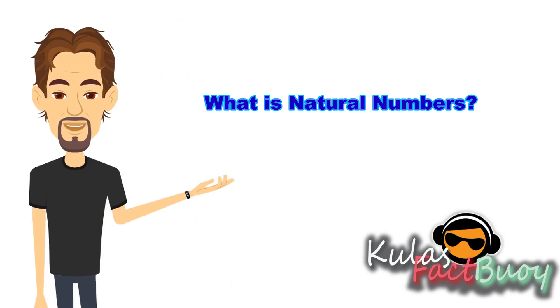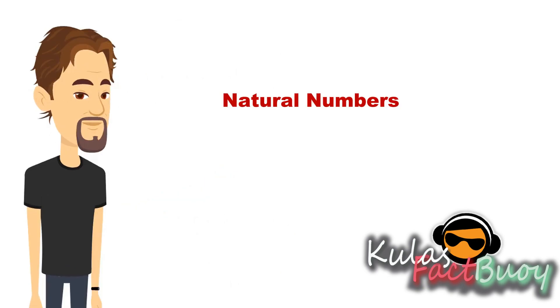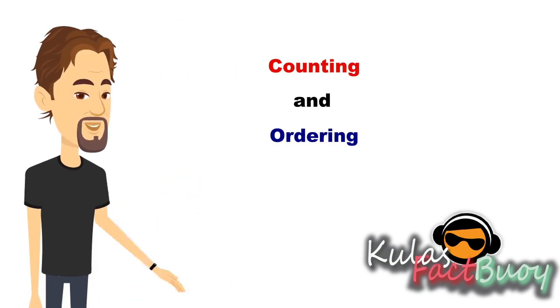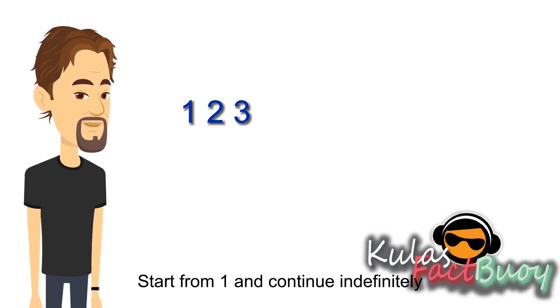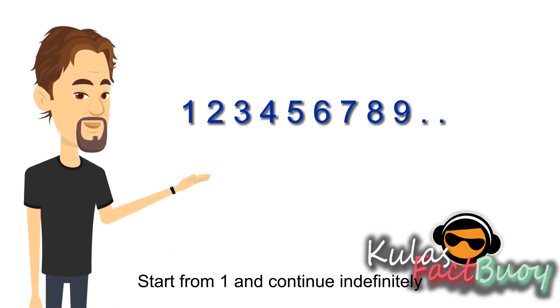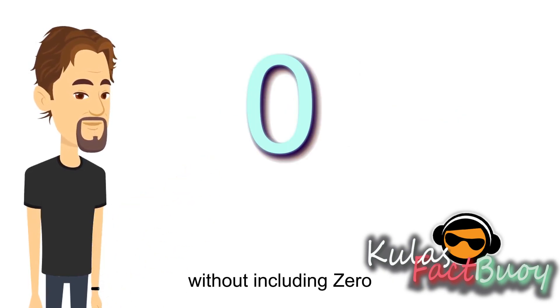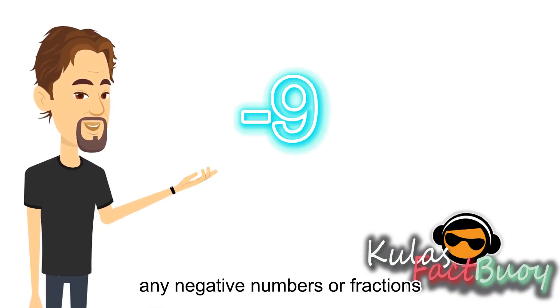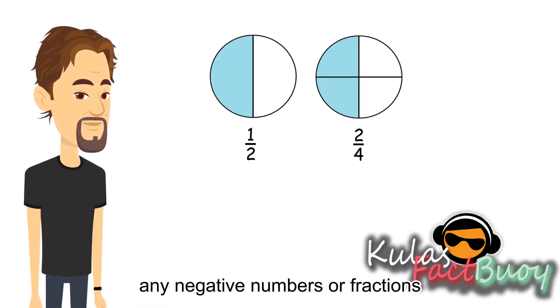What is natural numbers? Natural numbers are a set of numbers used for counting and ordering. They start from one and continue indefinitely, without including zero, any negative numbers or fractions.